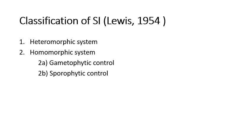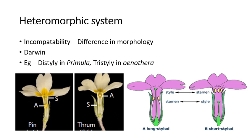In the heteromorphic system, the incompatibility is mainly due to differences in morphology. Examples include distyle in Primula and Oenothera, and tristyle in other species. In distyle, the style exists in two different morphologies: long style and short style. In tristyle, there are long, medium, and short styles. We will look at distyle in Primula in detail.